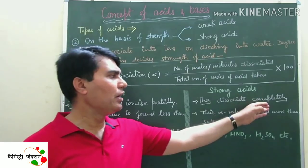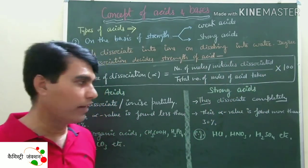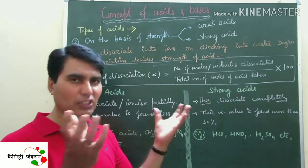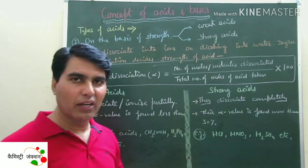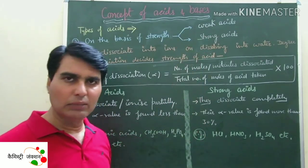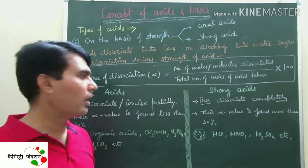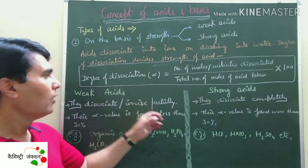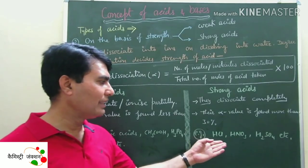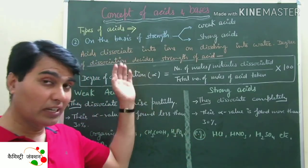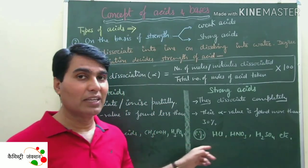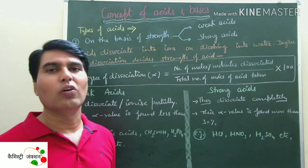Strong acids dissociate completely to give a larger number of H+ and hydronium ions. When they completely dissociate, the number of ions increases and the alpha value also increases — typically above 30%. Examples of strong acids include HCl, HNO3, and H2SO4. If you recall, these are the examples of inorganic acids, and inorganic acids are our strong acids.